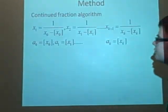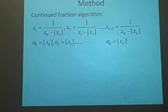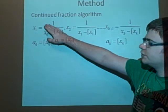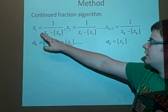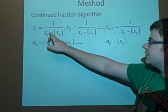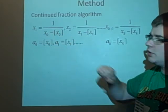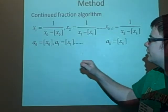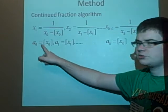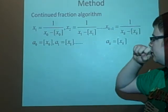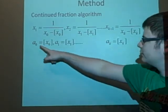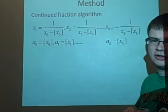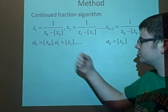And the method we use to find the continued fraction is here. So we have like x1 is 1 over x naught minus the integer part of x naught, that's what the brackets are meaning, the integer part. And if you wonder what x naught are, these are the a naughts that we had before.